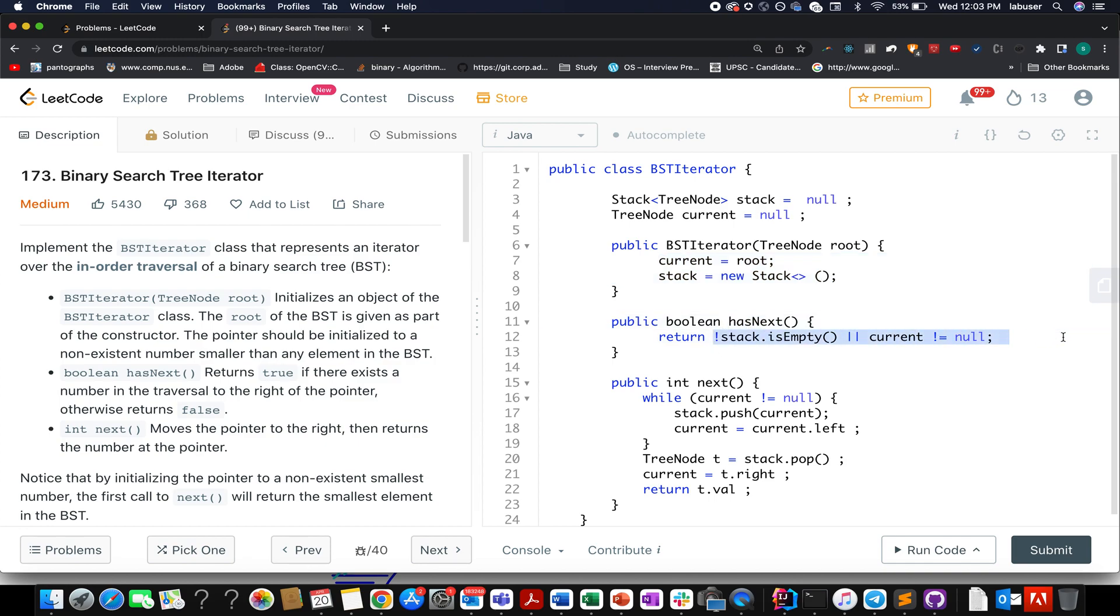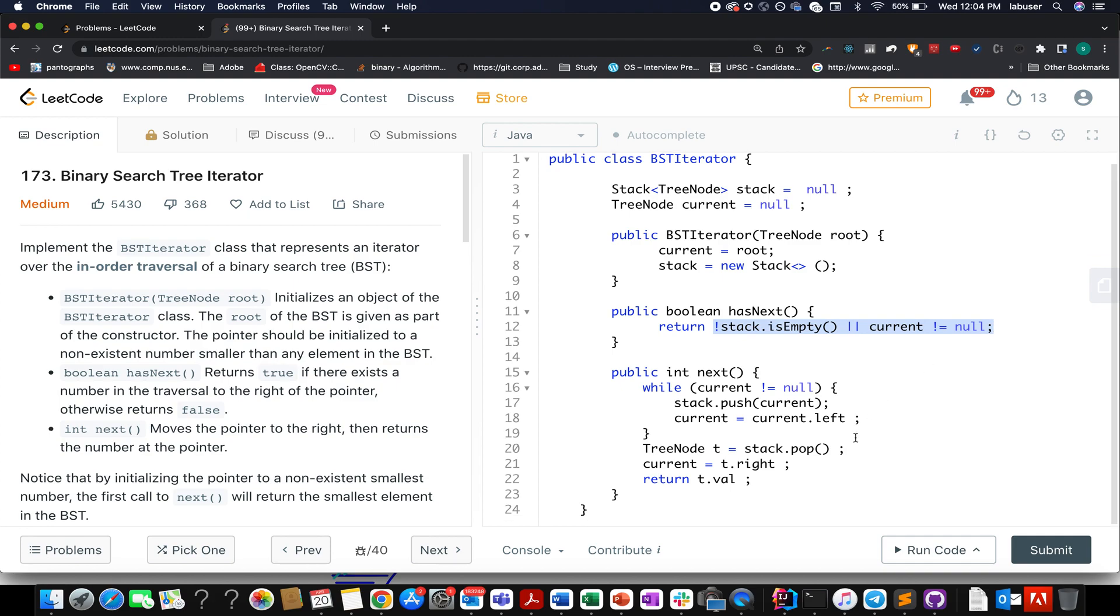My Boolean hasnext has the same condition as I told in the PPT. My stack is not empty and my current is not null. If either of these conditions are met, that means there are more elements in my binary search tree. Now comes the question, how are we going to write the next method? So again, it's exactly the same steps. While my current is not empty, I keep on pushing my current onto the stack. Current gets updated to current dot left. Once I'm done with this, I simply pull out elements from this stack. My current now points to t dot right and we simply return the value at t dot val. So let's try this up.